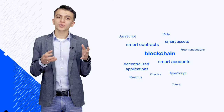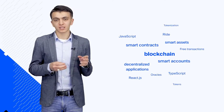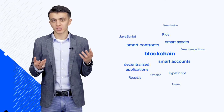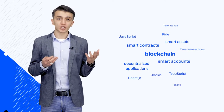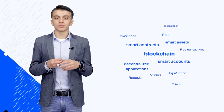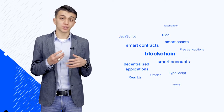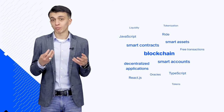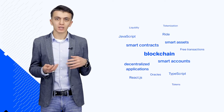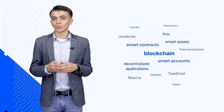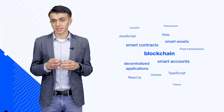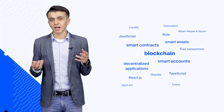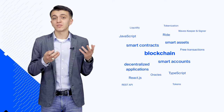We also dived into tokenization, different types of tokens like utility and security tokens, non-fungible and fungible. We talked about a few examples of tokenization, liquidity and the evolution of money. You also know how to work with Waves' client libraries, with Waves Keeper, with REST API and the Waves Explorer.